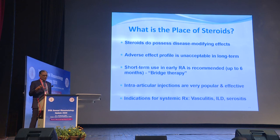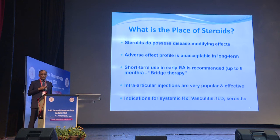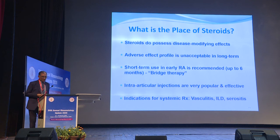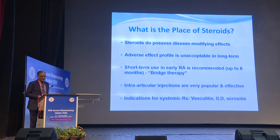Regarding the place of steroids: they do possess disease-modifying effects, but their adverse effect profile is unacceptable in the long term. Short-term use in early RA is recommended — up to six months, though generally for a much shorter period as bridge therapy while other slow-acting disease-modifying drugs take effect. Intra-articular steroid injections are very popular and effective. Systemic steroids have limited indications in RA, namely vasculitis, interstitial lung disease, and serositis.